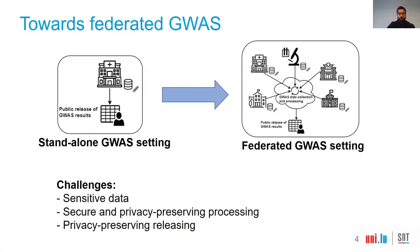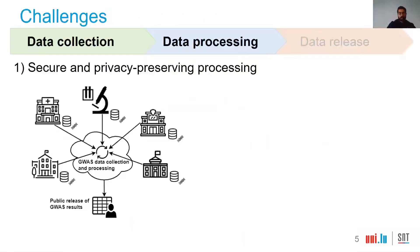We are now moving towards a federated GWAS setting, where we combine data from multiple sources instead of one alone. As a result, we would be able to produce more accurate results and find better statistical findings. However, as we are managing very sensitive data, we need to enforce secure and privacy-preserving processing, and also privacy-preserving release. Let's see in more detail what the main challenges are.